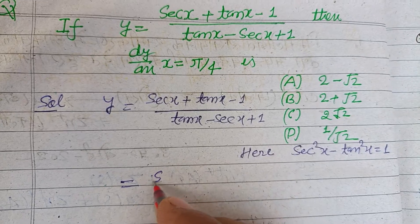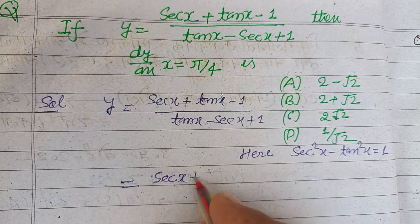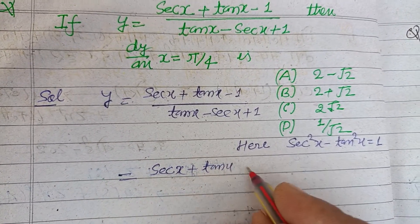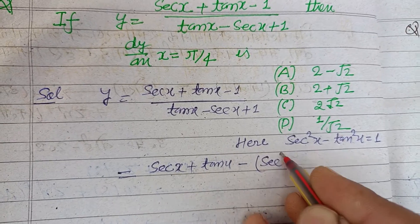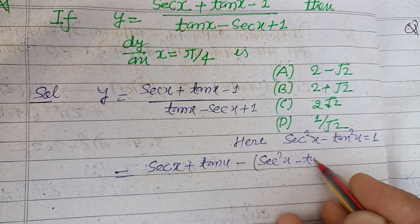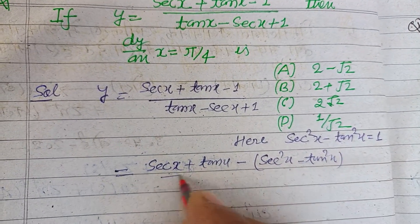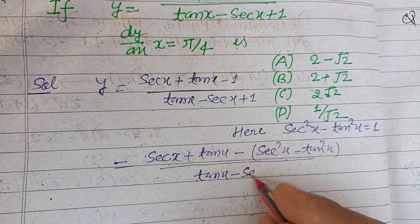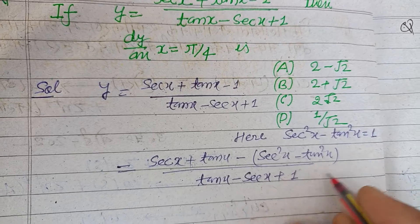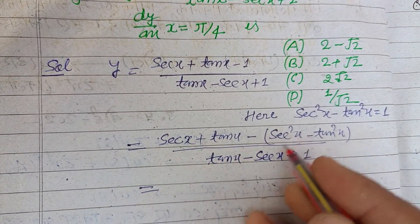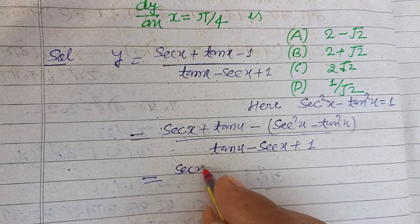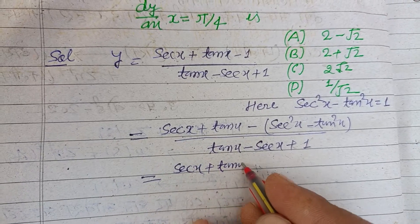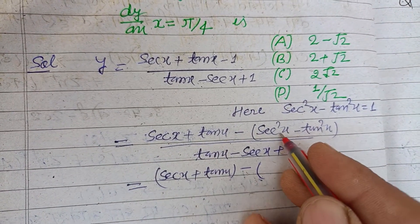So putting this in place of 1 in the numerator: sec x + tan x minus (sec²x - tan²x) over (tan x - sec x + 1). Now simplifying this...